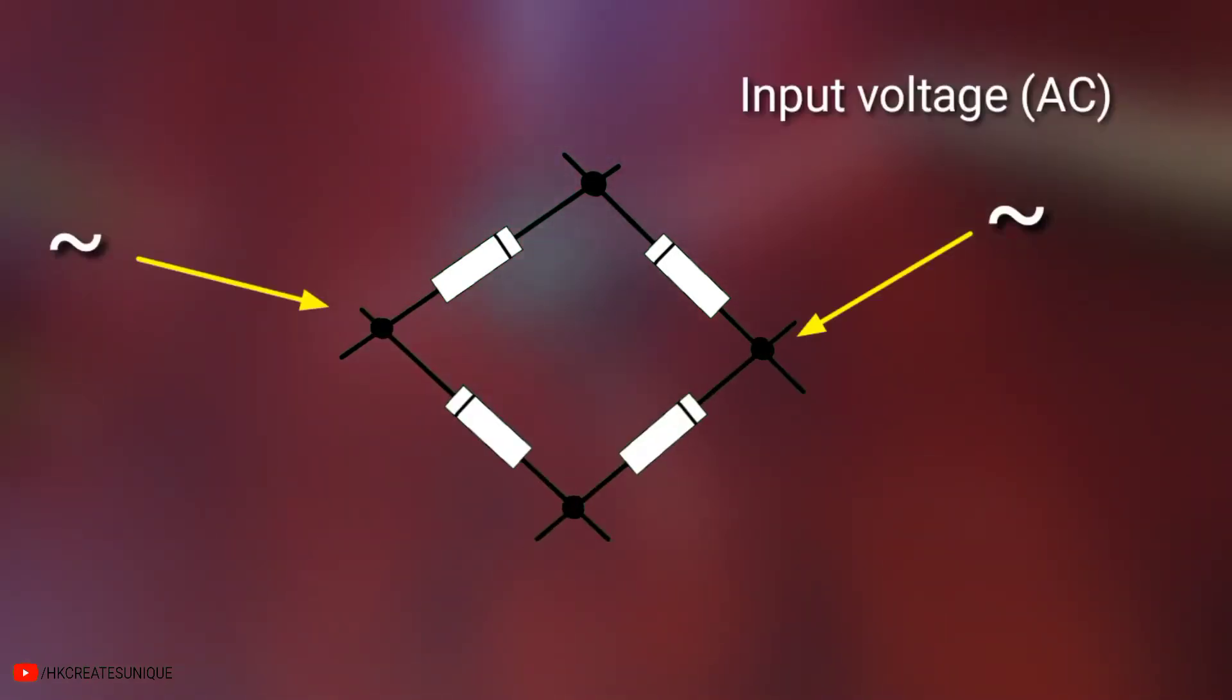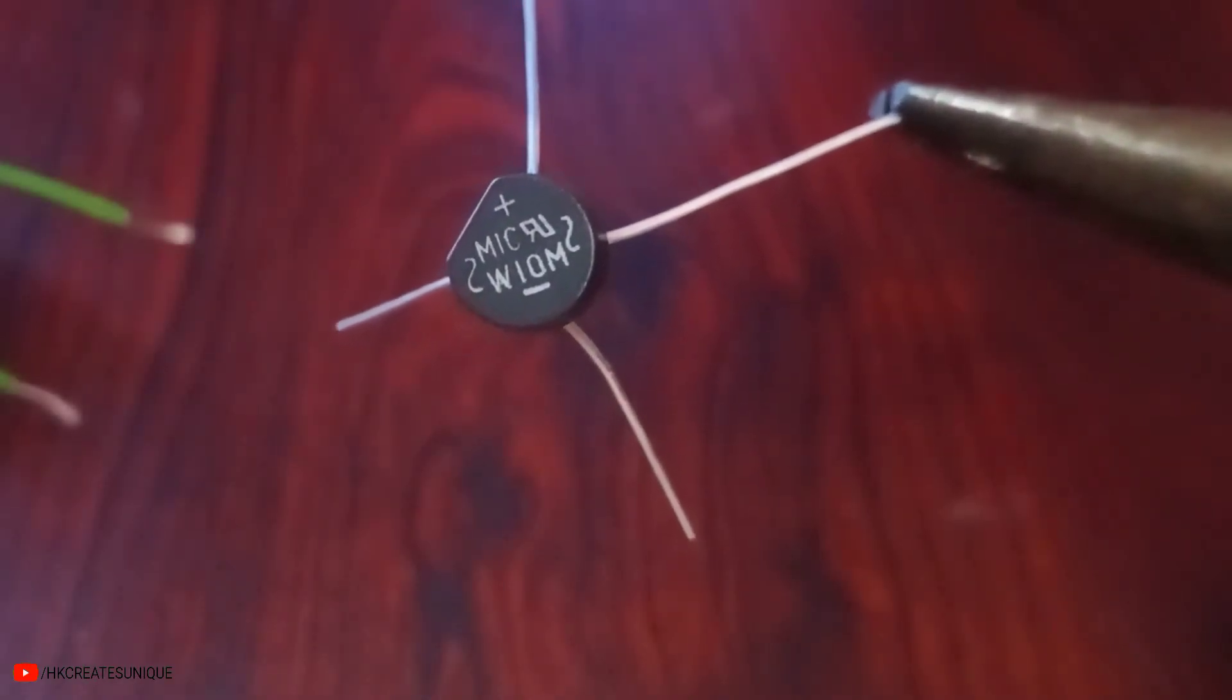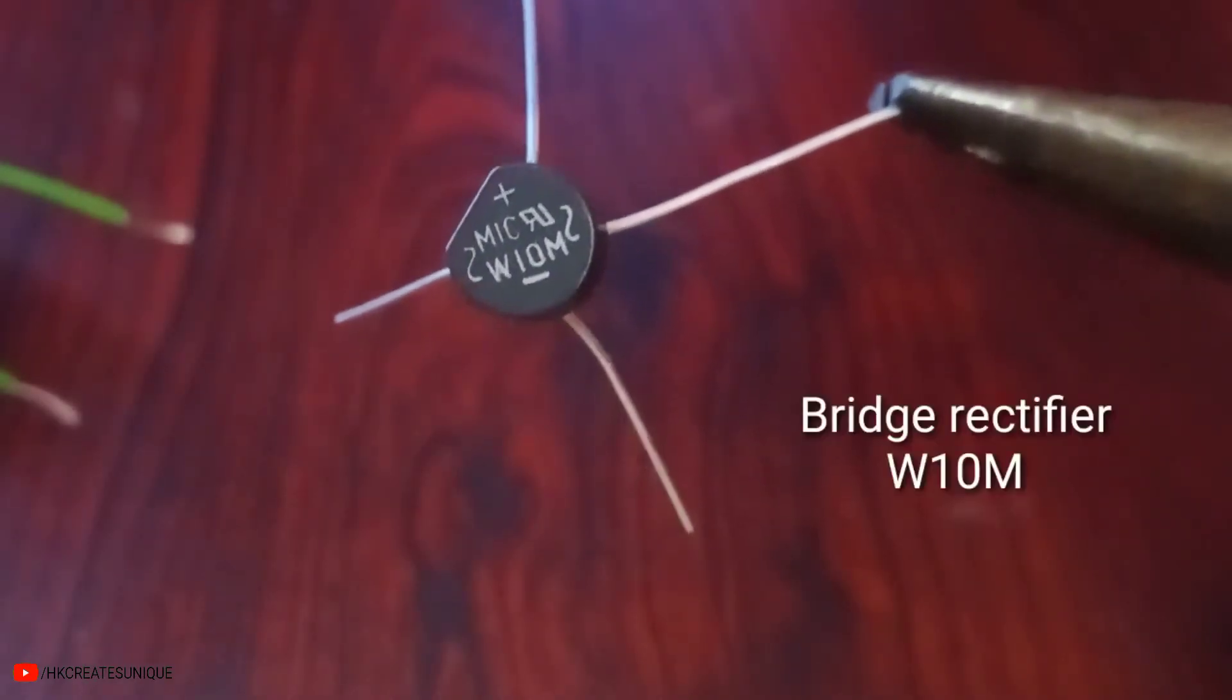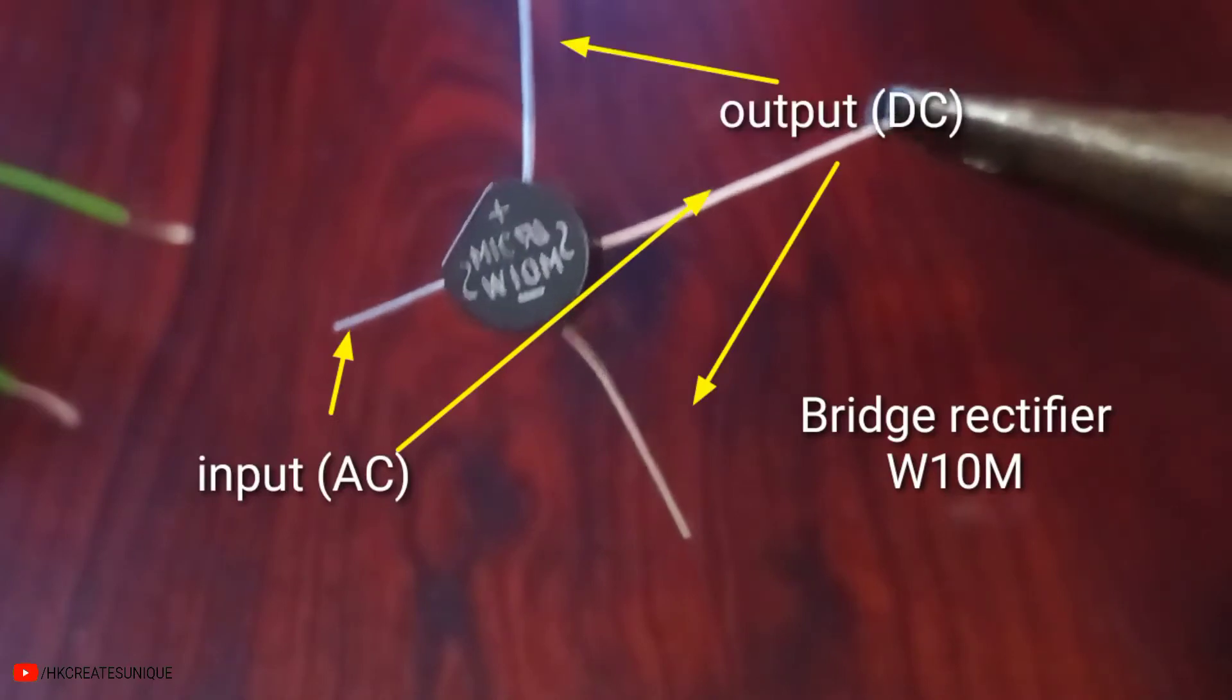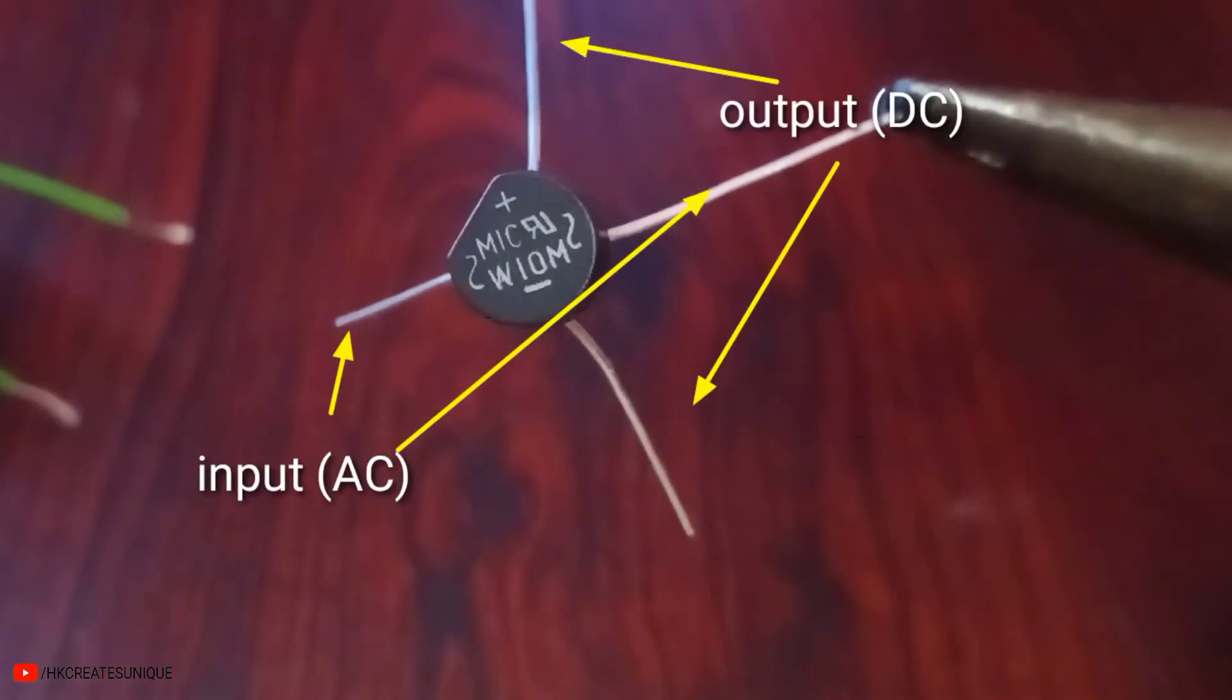This is the input voltage, and this is the output voltage which is direct current. I am using a bridge rectifier package W10M which has the same four diodes inside.